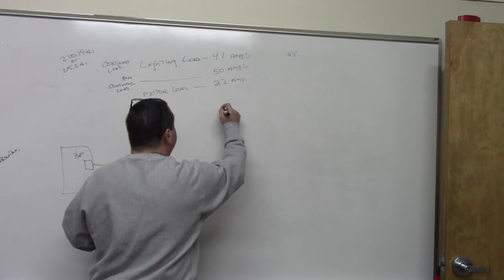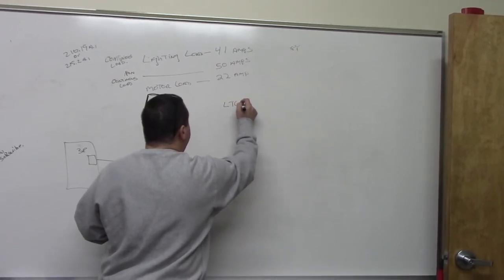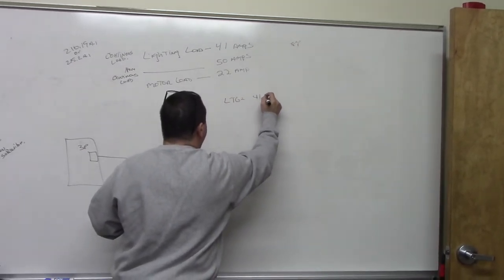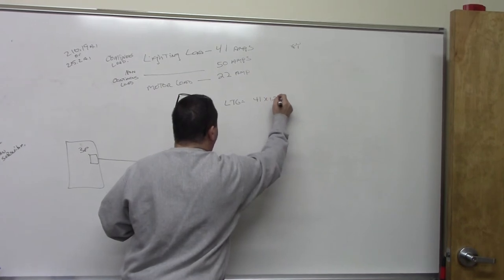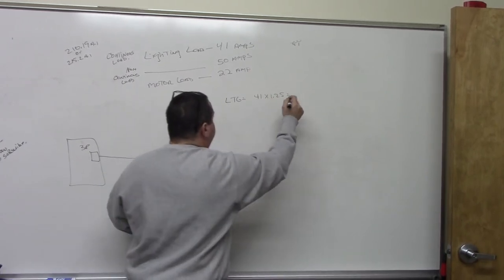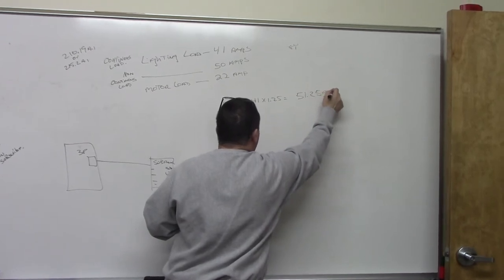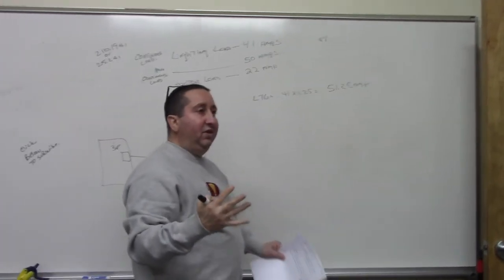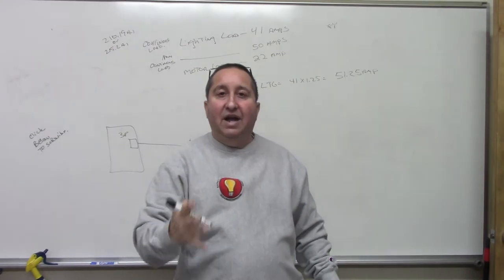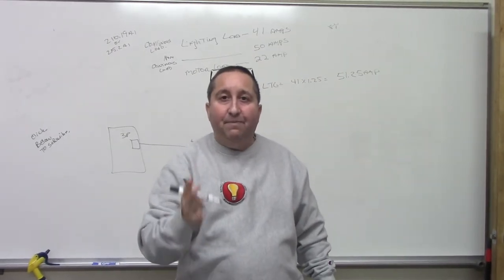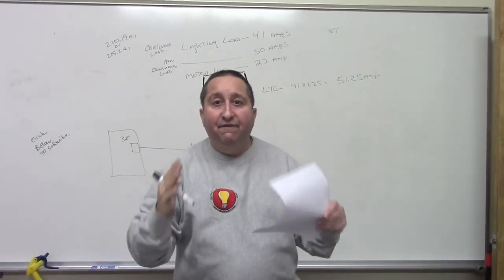So basically, your lighting load, lighting is equal to 41 amps times 1.25 continuous load, which is 51.25 amps. Remember, as soon as you do lighting, other than dwellings, you've got to add 125%. Very, very important.